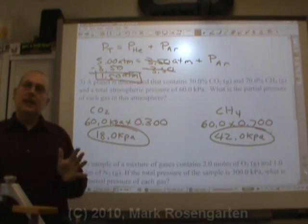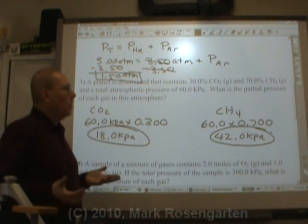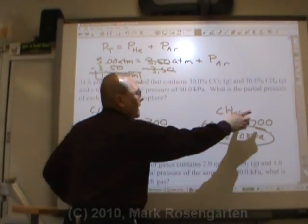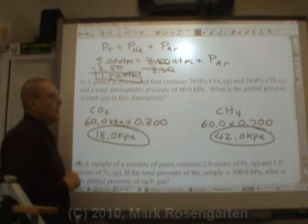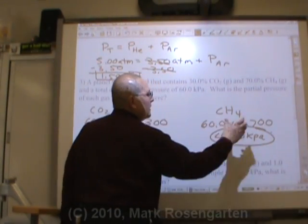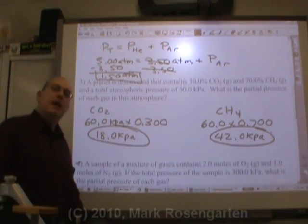So if you want to find out what the partial pressure of the gases are, and you know what percent that gas is, 30% of 60, that's the pressure of carbon dioxide. 70% of 60, that's the partial pressure of the methane.